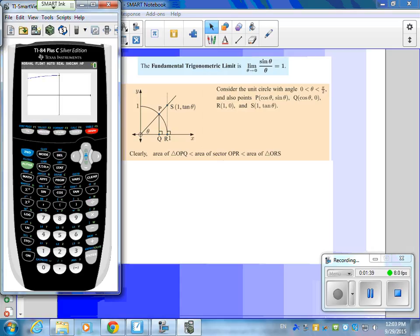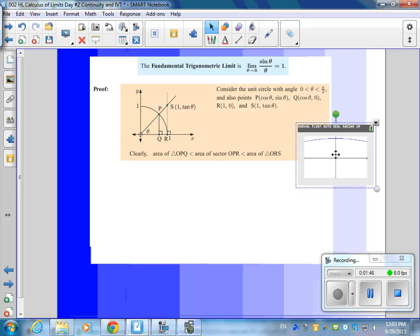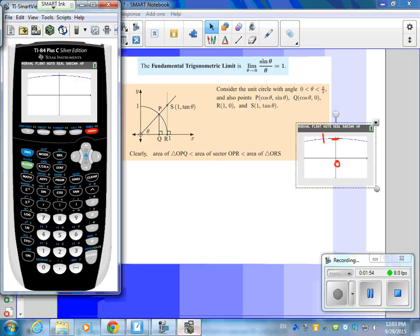This is sine x over x. And what does the y value appear to be for that? Here's 0. What does the y value appear to be? 1, right? But look at this.